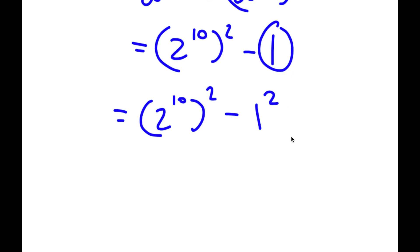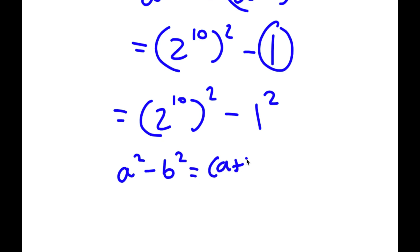And now if you notice, both of these numbers are squared. And if I have something in the form a squared minus b squared, this is equal to a plus b times a minus b.